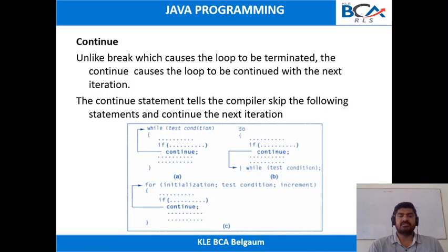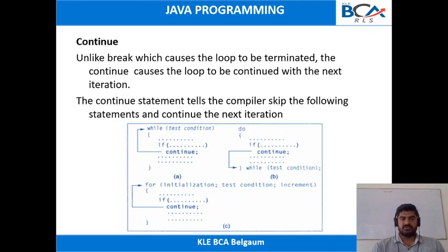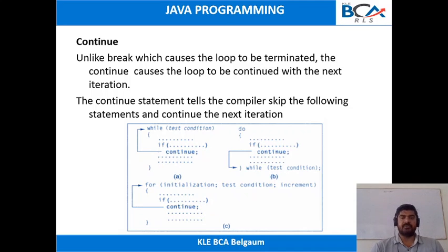Hello students. In this session we will start with the continue statement in Java. In the previous session we learned about the break statement. Whenever you include the break statement in your program, the execution of the program will terminate — if you include the break statement inside a for loop, the execution of that for loop will be terminated and control will come outside the for loop. Unlike the break, which causes the loop to be terminated, the continue causes the loop to be continued with the next iteration.